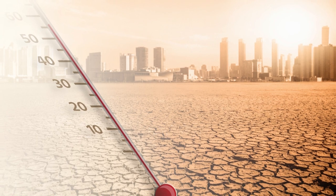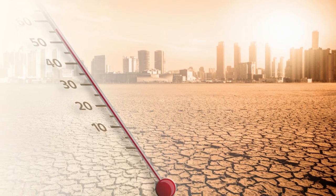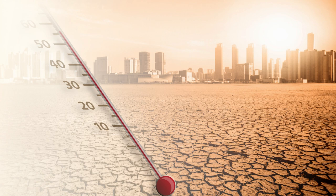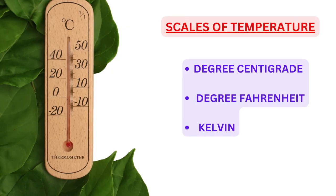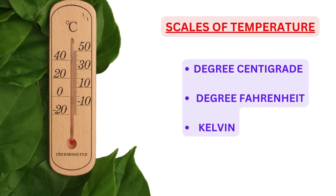In the last flight we studied atmospheric pressure. After pressure, temperature is the most important variable in meteorology. Information or data covered in this video under red outline is to be remembered for the purpose of examination. So what is temperature? Temperature is a measure of average kinetic energy of the atoms or molecules in a system, whereas heat is the total energy. Both temperature and heat are different. Temperature is measured in one of three scales.